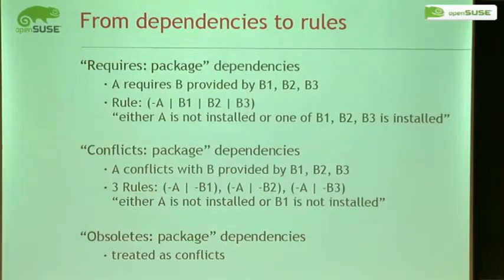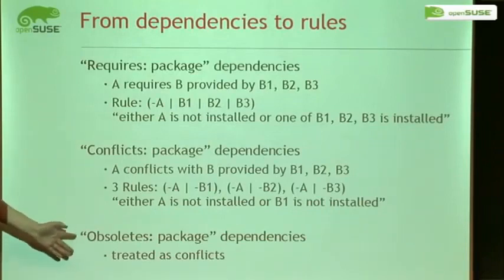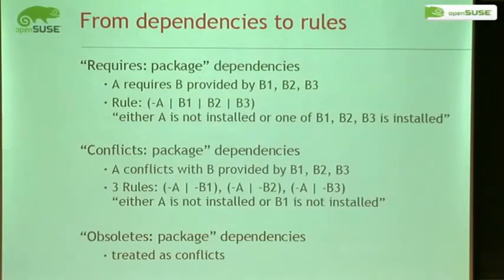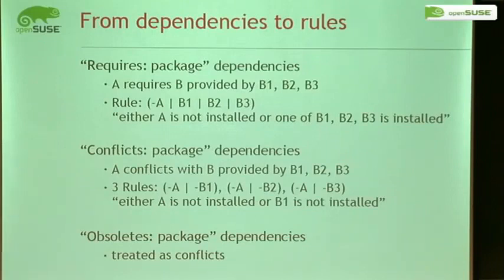Obsoletes work pretty much the same way. Normally for installed packages they are ignored, but for uninstalled packages, obsoletes are treated as conflicts. The solver doesn't know what to do if you select package A for installation — not installed before — and also select B for installation, also not installed before, and A and B obsolete each other. The result is undefined depending on install order, so it just treats them as a conflict because they can't coexist well in the system.